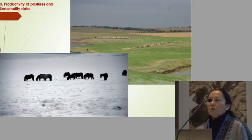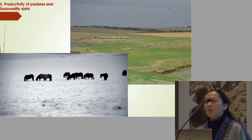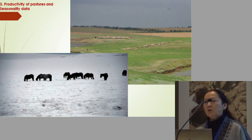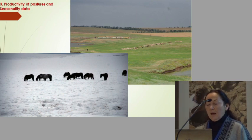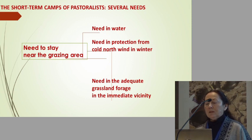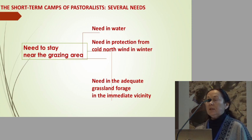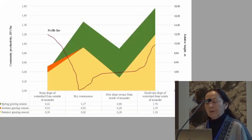The next issue was to understand the productivity of pasture and seasonal data, because we also have proof now that isotope values of pasture plants vary due to the seasons and climate conditions. For many years we tried to find the settlements, and now at least we were able to find seasonal campsites. The location of seasonal camps is also based on certain needs which pastures had to meet.